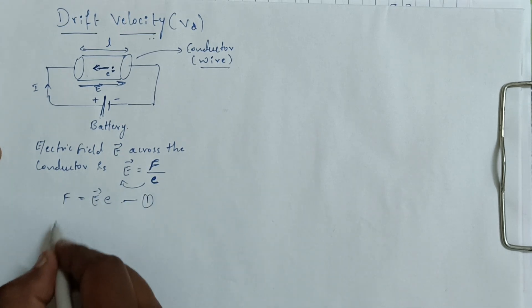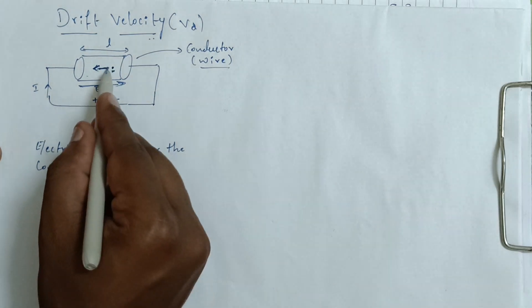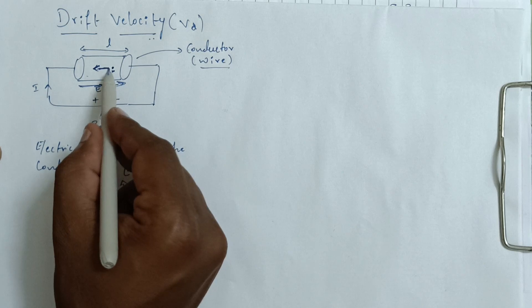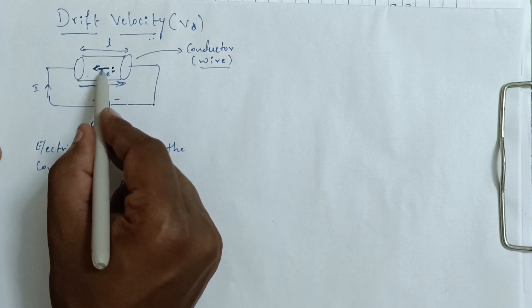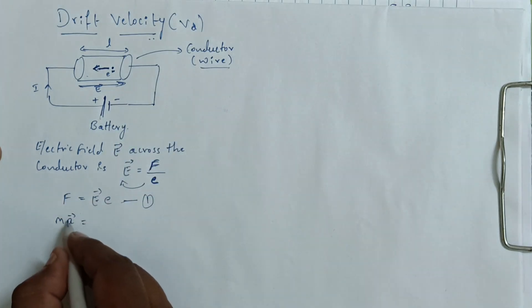From Newton's second law we know that force is mass into acceleration. Here mass means mass of the electron M into A. A means acceleration of the electron because when the electric force acts on the electron, these electrons get accelerated. Hence F equals MA.